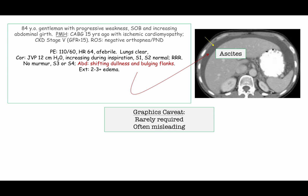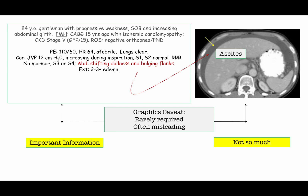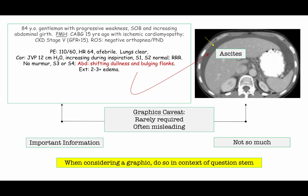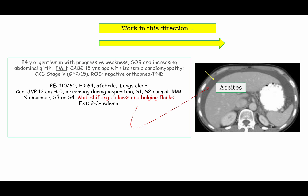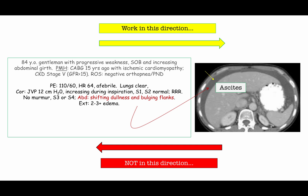That brings us to the graphic. This image has a yellow arrow pointing to the ascitic fluid. If you were able to identify ascites, great — but if not, the question stem told you exactly what you were seeing. This underscores my general approach to graphics: they are rarely needed to answer a question, and students are often misled by them. My rule of thumb is: the stem is important, the graphic not so much. It is a rare question where you need the graphic to derive the correct answer. View graphics in the context of the question stem — work in the direction of question stem to graphic, not the other way around.